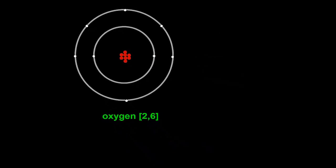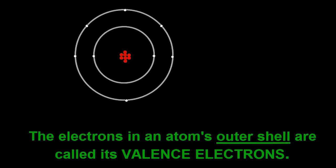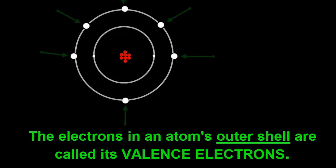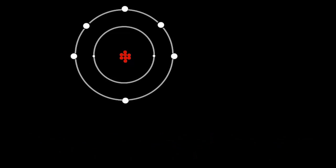The electrons in an atom's outer shell are called its valence electrons. Oxygen has 6 valence electrons, yet its outer shell could take up to 8. In other words, it could take another 2 electrons before it becomes full.